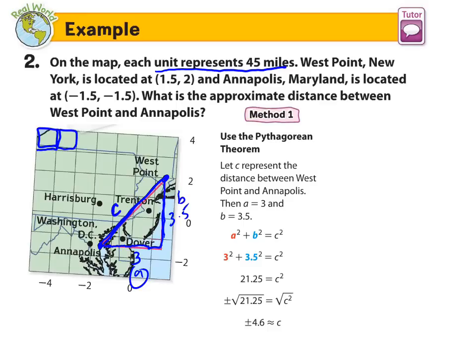So we plug in the numbers for A² + B² = C². So we plug in 3², which is 9, plus 3.5² equals C squared. That adds up to 21.25. Find the square root. We get positive or negative 4.6.